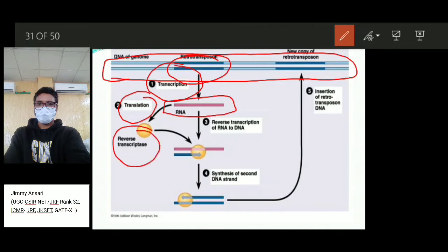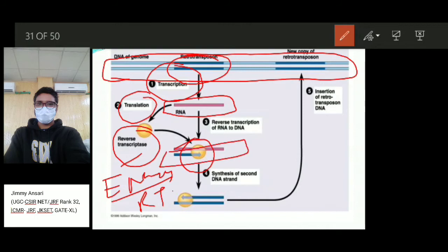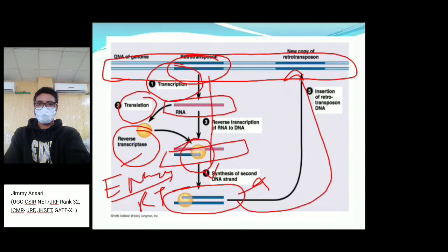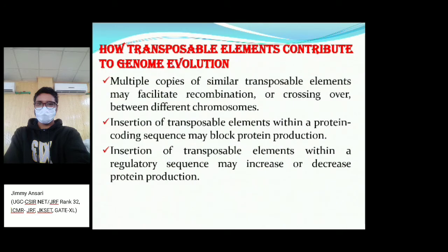This enzyme is called reverse transcriptase. Using this enzyme, the RNA is converted back into DNA. Through DNA replication, additional copies are synthesized, ultimately producing a new DNA copy that is then inserted into another position in the genome — insertion of the retrotransposon. This is the complete process of how retrotransposition happens.